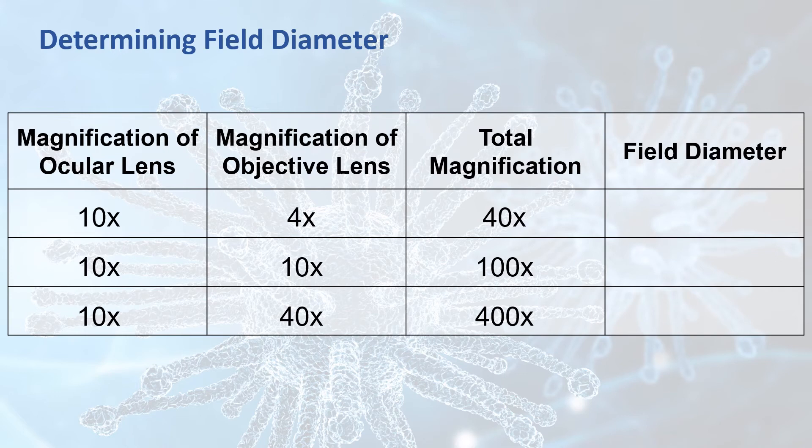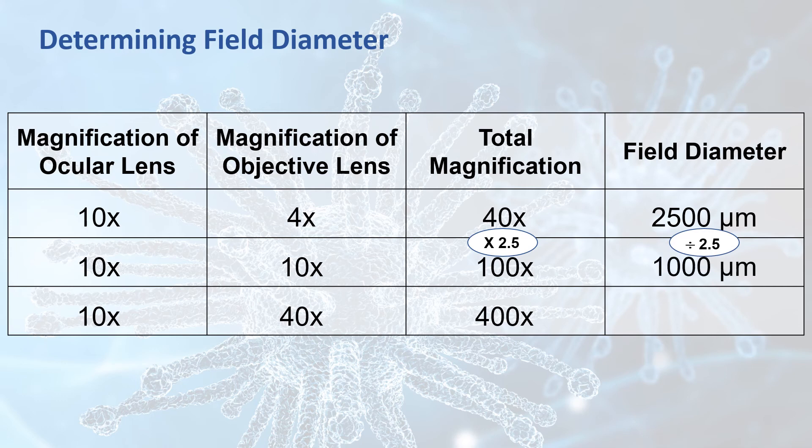So how do you know the size of the field diameter for the magnification that you're using? Well, it turns out it's very predictable. Take the microscopes in our lab. With the lowest total magnification of 40 times, they have a field diameter of about 2.5 millimeters or 2500 micrometers. Now, say you want to change your objective lens and increase your magnification. So you want to go from a total magnification of 40 times to a total magnification of 100 times. Well, to do that, you're multiplying your magnification by a factor of 2.5. In contrast, the field diameter is divided by the same factor, 2.5, so it goes from 2500 to 1000 micrometers.